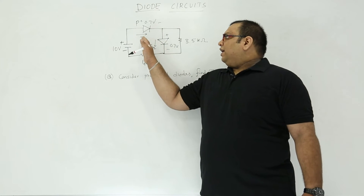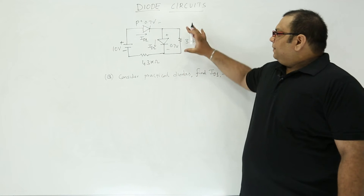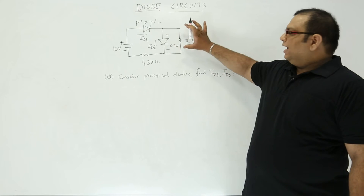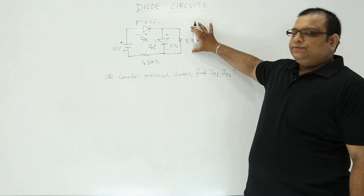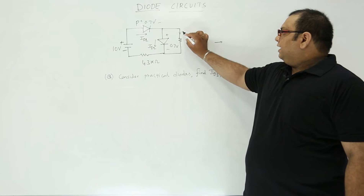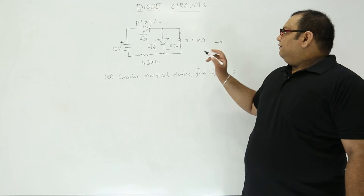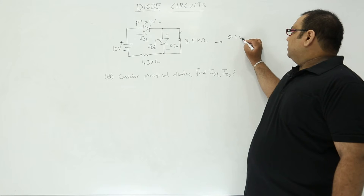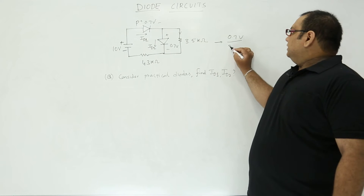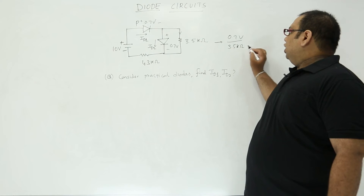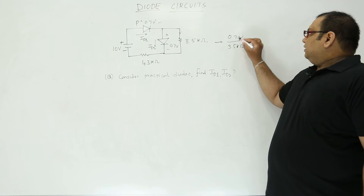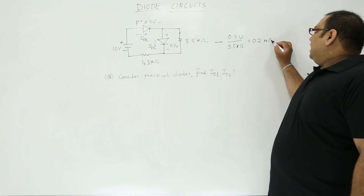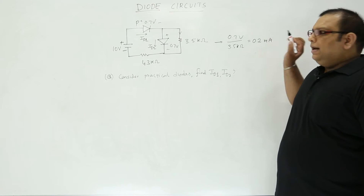Here we need to find ID1 as well as ID2. If you observe carefully, the 0.7 volt drop across the diode is the same drop that will appear across this resistance also. So the current in this resistance will be equal to: voltage is 0.7 volts and the resistance is 3.5 kΩ, giving a current of 7/35 = 1/5 = 0.2 milli-amperes.